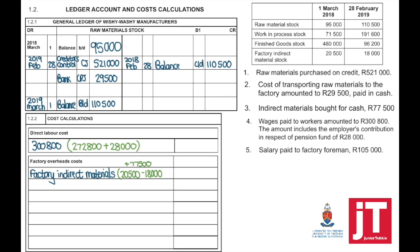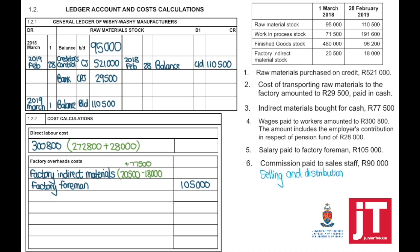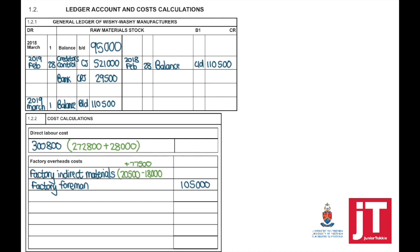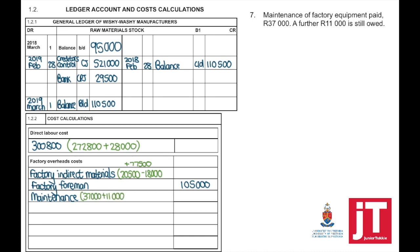Transaction 5: salary paid to the factory foreman was 105,000. This is an indirect cost, so it goes to your factory overhead cost. Transaction 6: commission paid to sales staff, 90,000 — this does not go to factory overhead or direct labor cost. Commission paid to sales staff forms part of your selling and distribution cost, so exclude it. Transaction 7: maintenance of factory equipment paid 37,000, and a further 11,000 is still owed, so the total expense is 37,000 plus 11,000 equals 48,000.